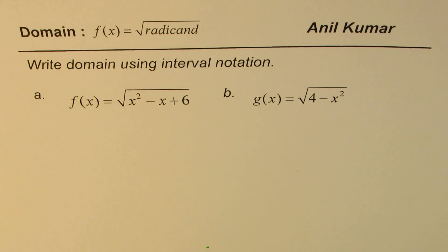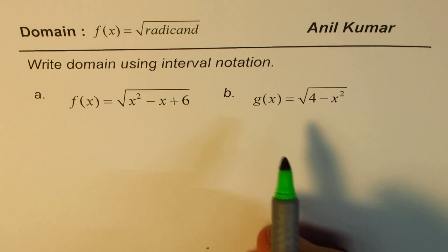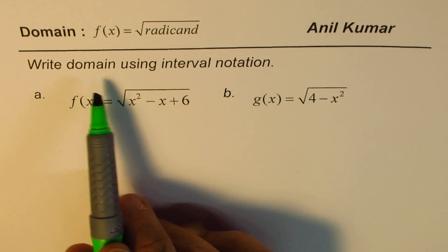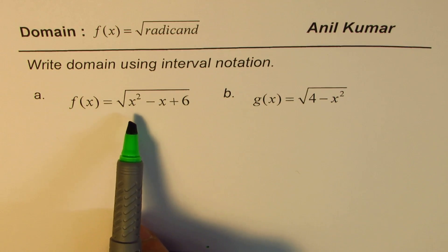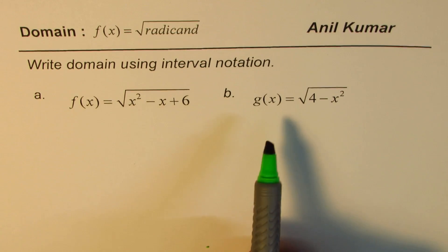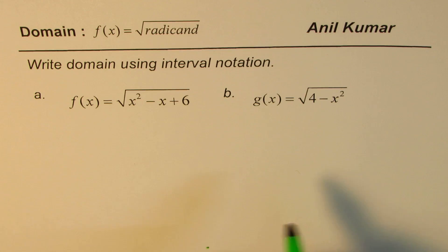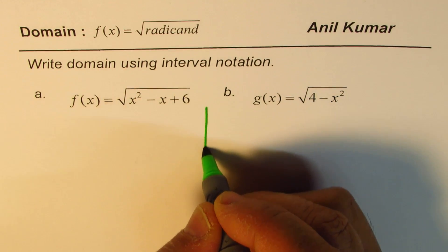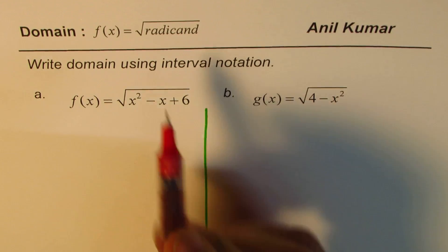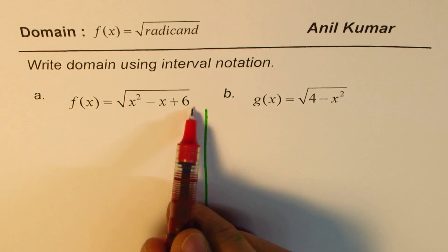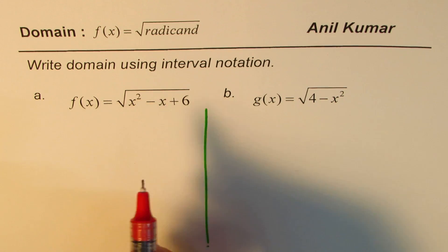Here I have two examples where we look into square root functions. The question here is, write domain using interval notation. f of x equals square root of x squared minus x plus 6, and g of x equals square root of 4 minus x squared. Now, to find domain of radical functions, the idea is that the radicand, whatever is inside the root, should always be non-negative.